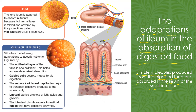This is inside the ileum. These structures are known as villi. Villi is plural, so if we only take one structure, it is known as villus — villus is singular. Now we are going to see the adaptation for villus.